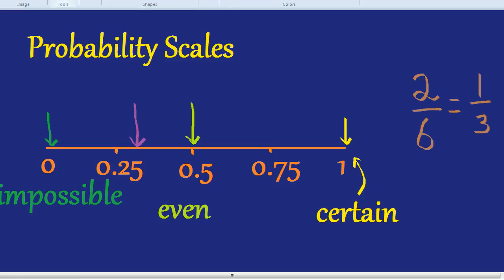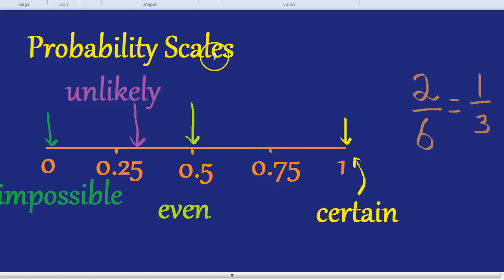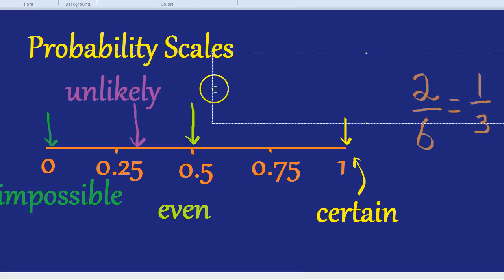Another quick way we could describe probabilities between 0 and 0.5 would be unlikely. And chances which are between 0.5 and 1 we could call likely.